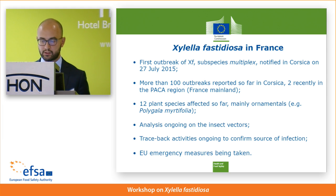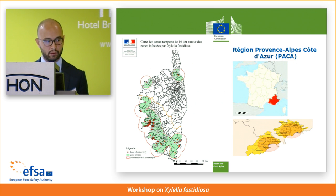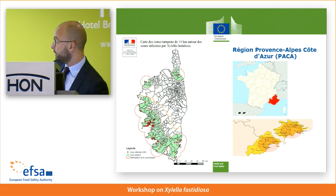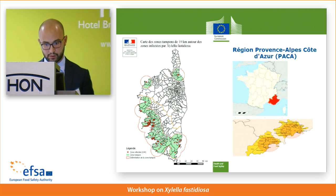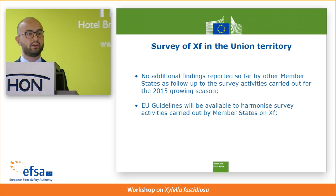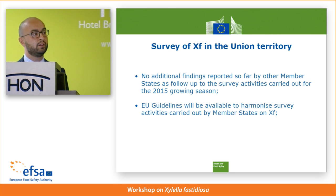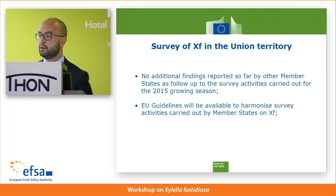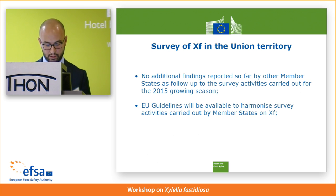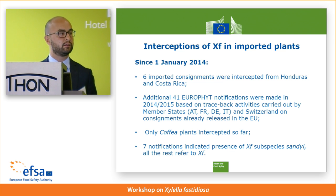Two outbreaks were also recently reported in the PACA region on mainland France, with more than 12 plant species affected, mainly ornamentals. There is particular concern regarding Polygala myrtifolia, which has been found infected in all outbreaks so far. Further investigations are ongoing to trace back the origin of the infection, including analysis of insect vectors. EU emergency measures are currently being taken. Survey of Xylella fastidiosa is mandatory in all member states, and so far no further findings have been reported for the 2015 growing season. EU guidelines are being prepared to harmonize survey activities across member states.